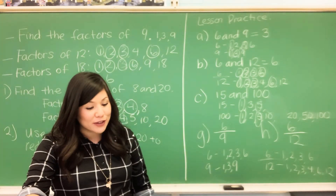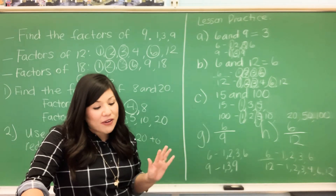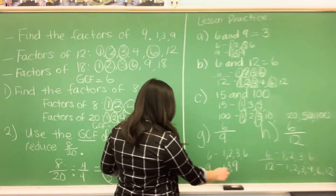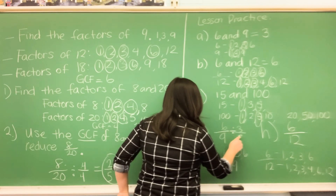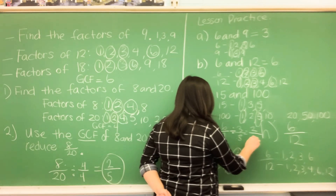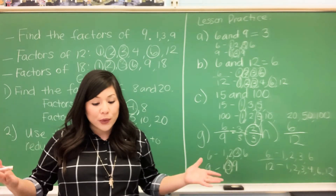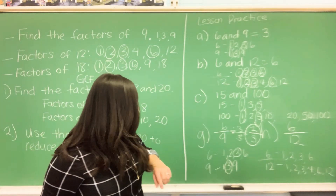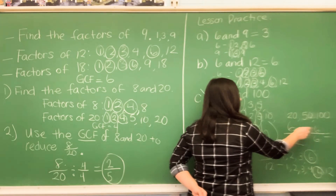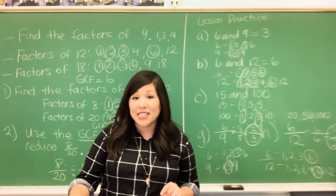Let's look at letter G: 6 over 9. Reduce each fraction by dividing the terms by their greatest common factor, GCF. The greatest common factor for 6 and 9 is 3. So 6 divided by 3 is 2, and 9 divided by 3 is 3. I reduced 6 ninths to 2 thirds by finding the greatest common factor. Now 6 over 12: the greatest common factor for both is 6. So 6 divided by 6 is 1, and 12 divided by 6 is 2. I reduced 6 twelfths to 1 half by finding the greatest common factor.